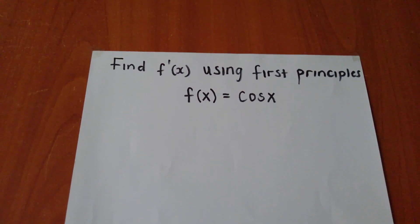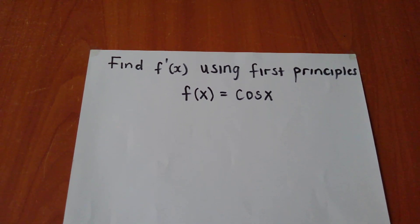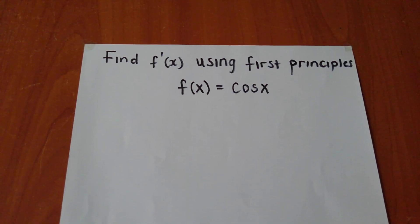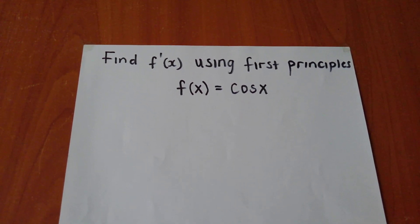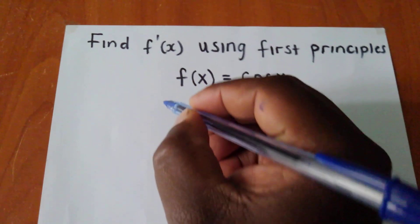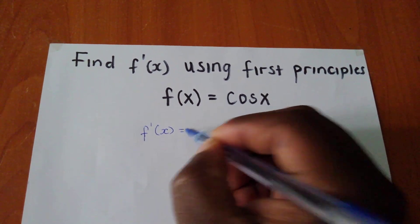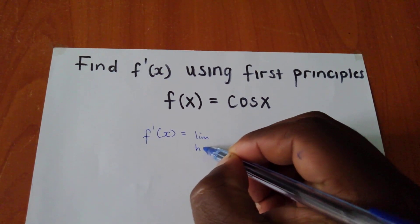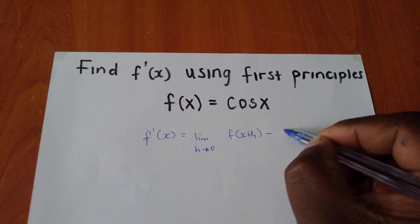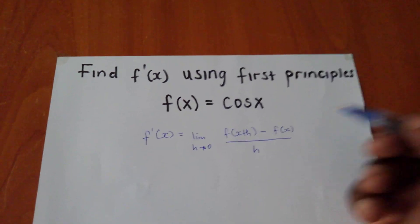Once again I've been asked to do the differentiation of cos x using first principles. In this video I want to illustrate, as I did for sine x. We start with the first principles formula: f prime of x equals the limit as h tends to 0 of f(x plus h) minus f(x), all over h. This is our universal formula.